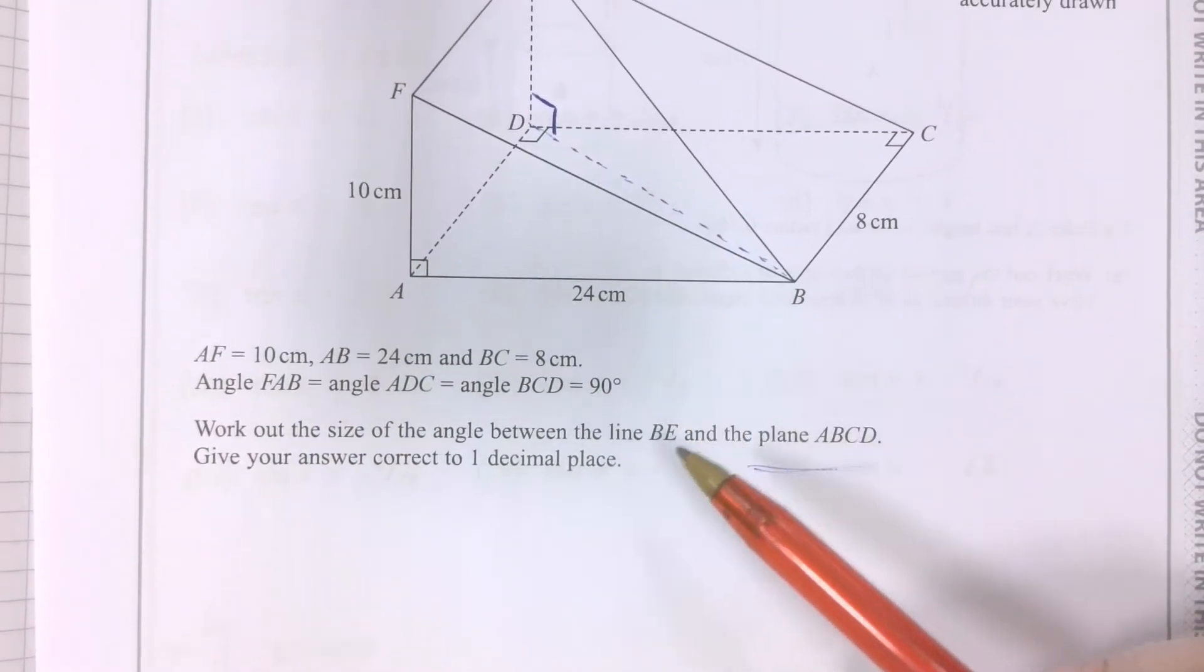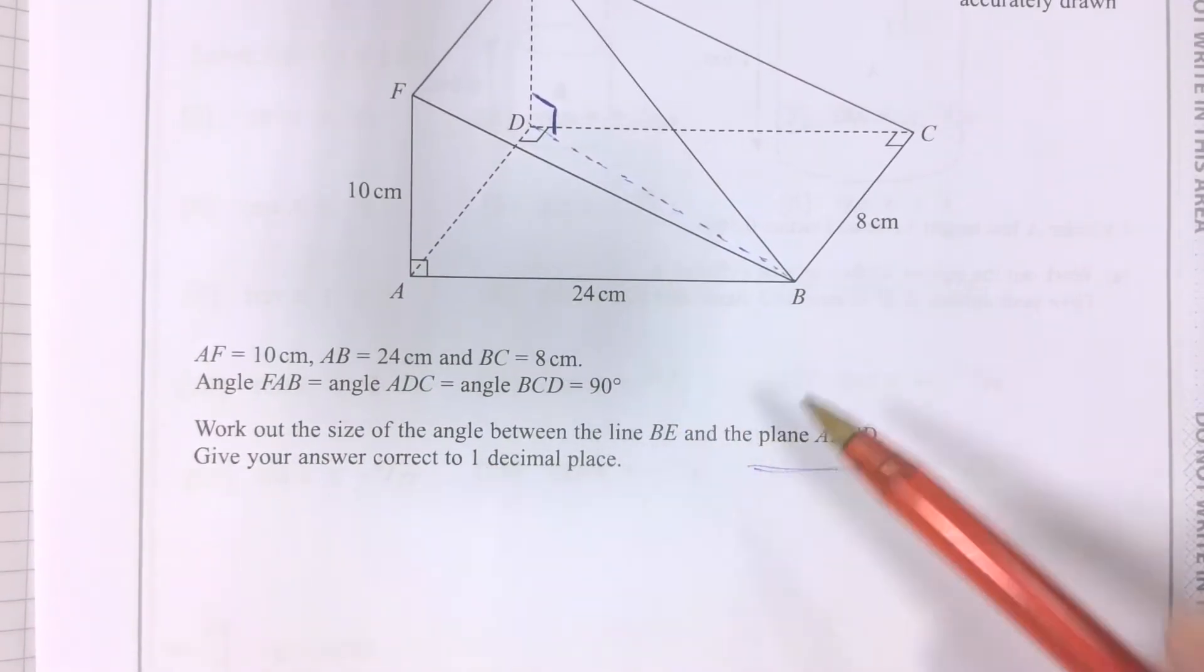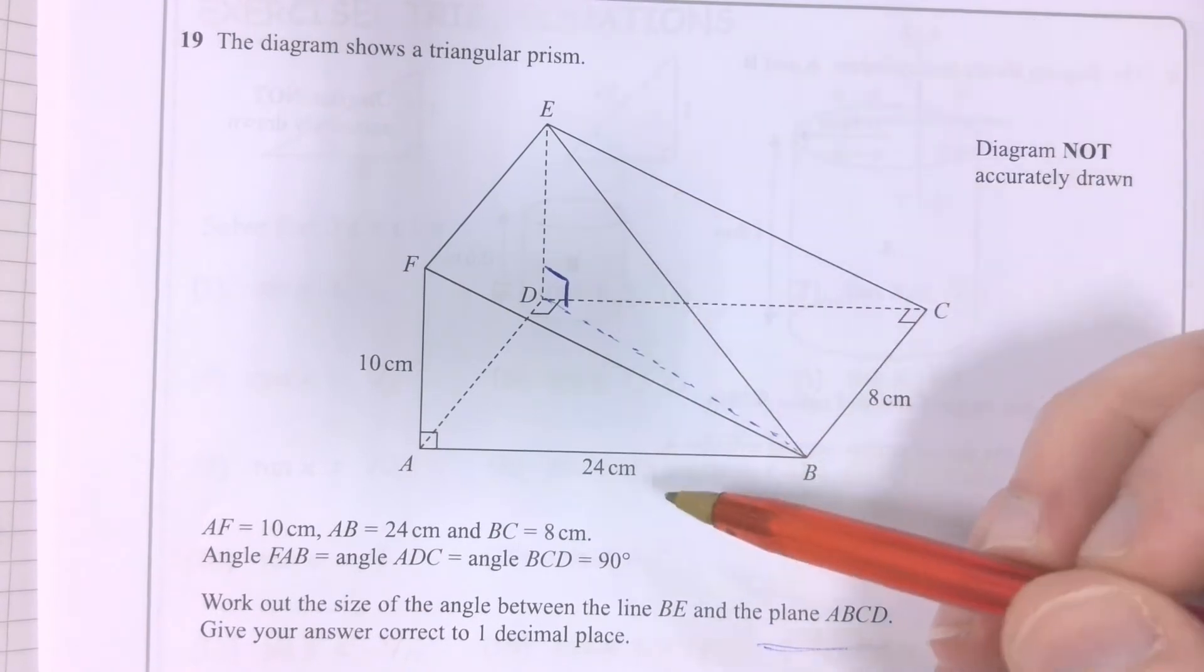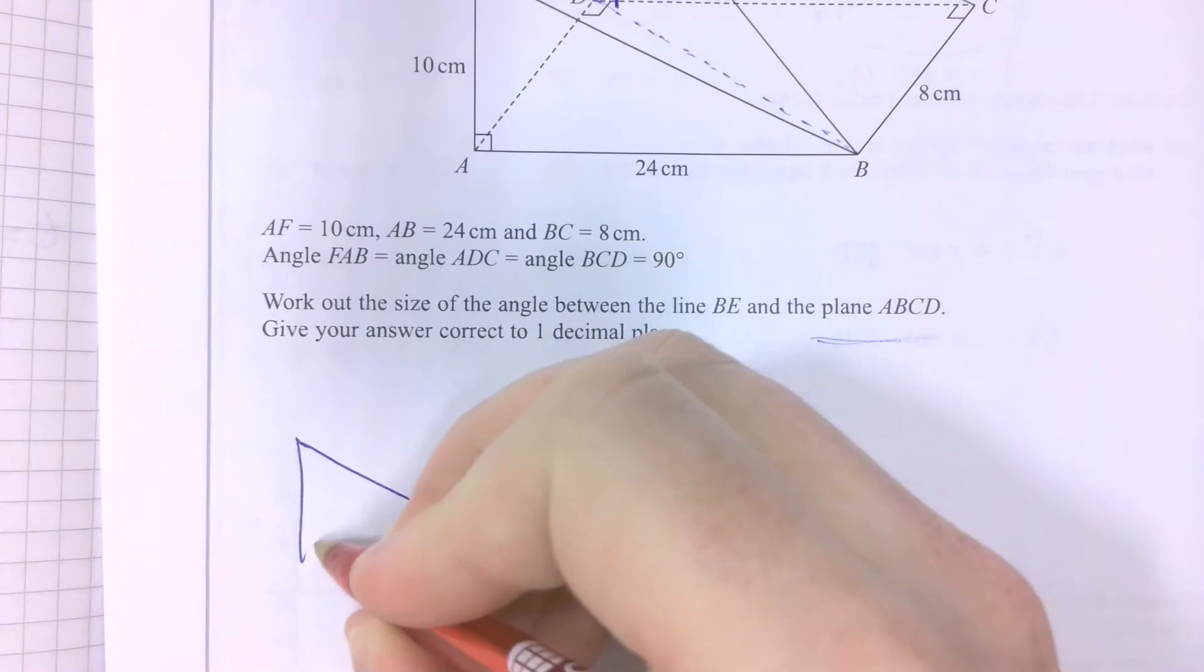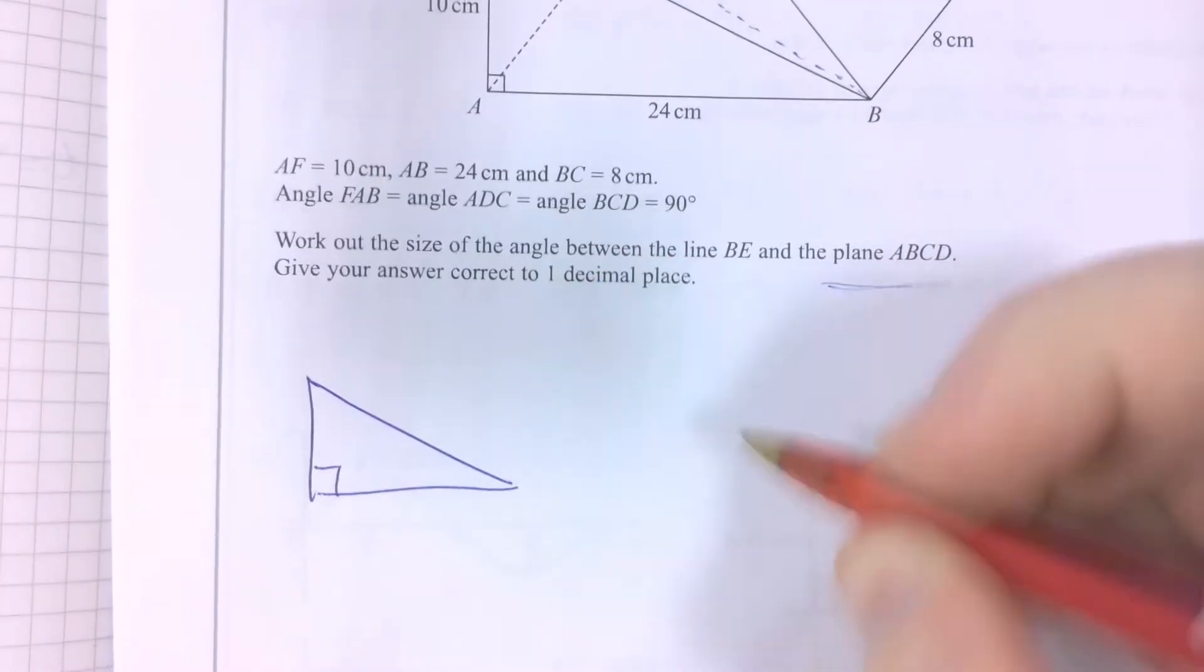So I need to work out the size of that angle. It's a right-angled triangle, SOH CAH TOA trig. Let's draw it out. Just making sure it's visible on screen here.